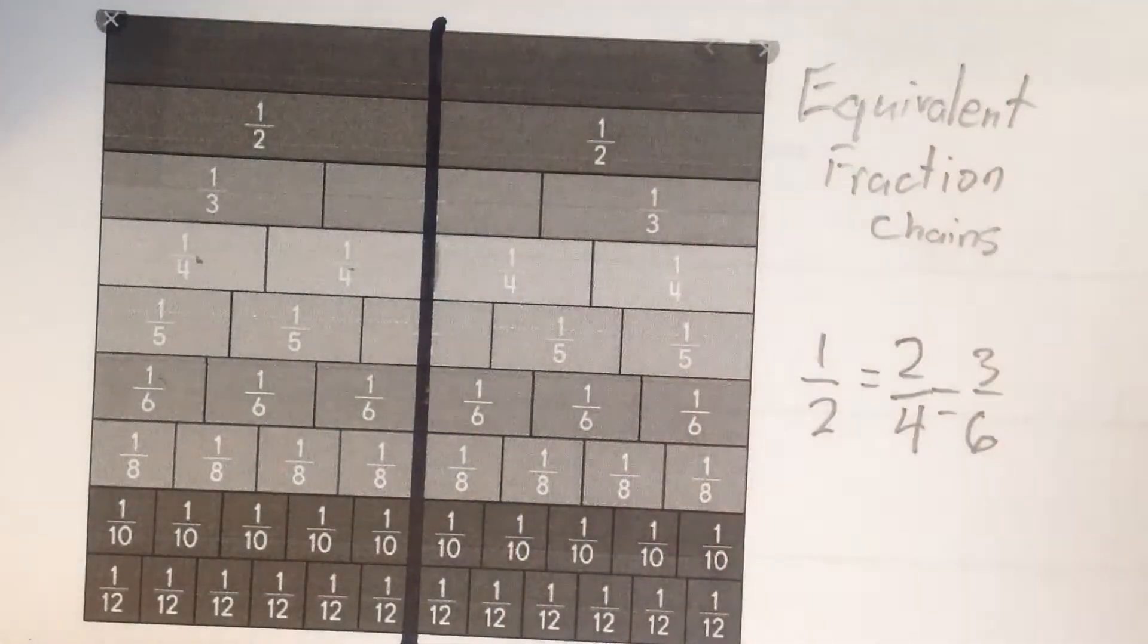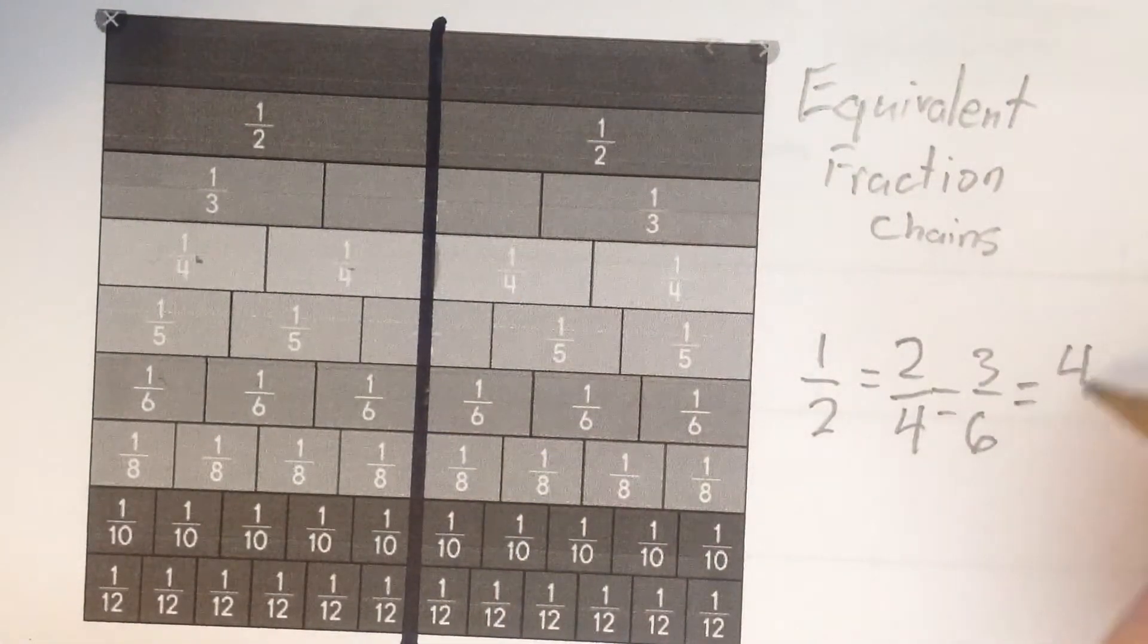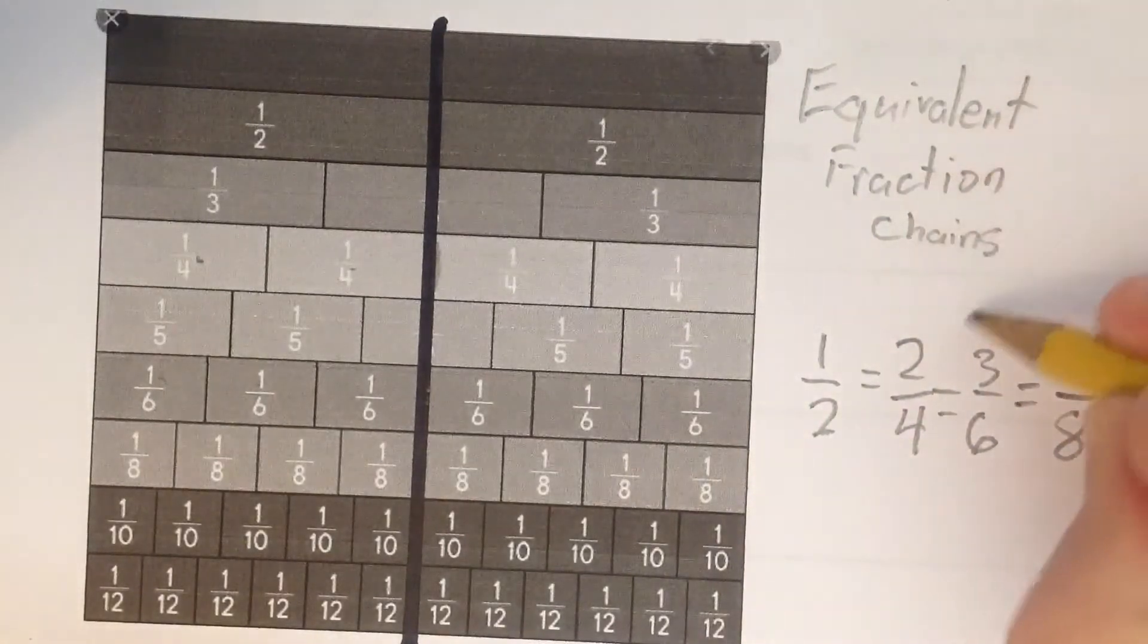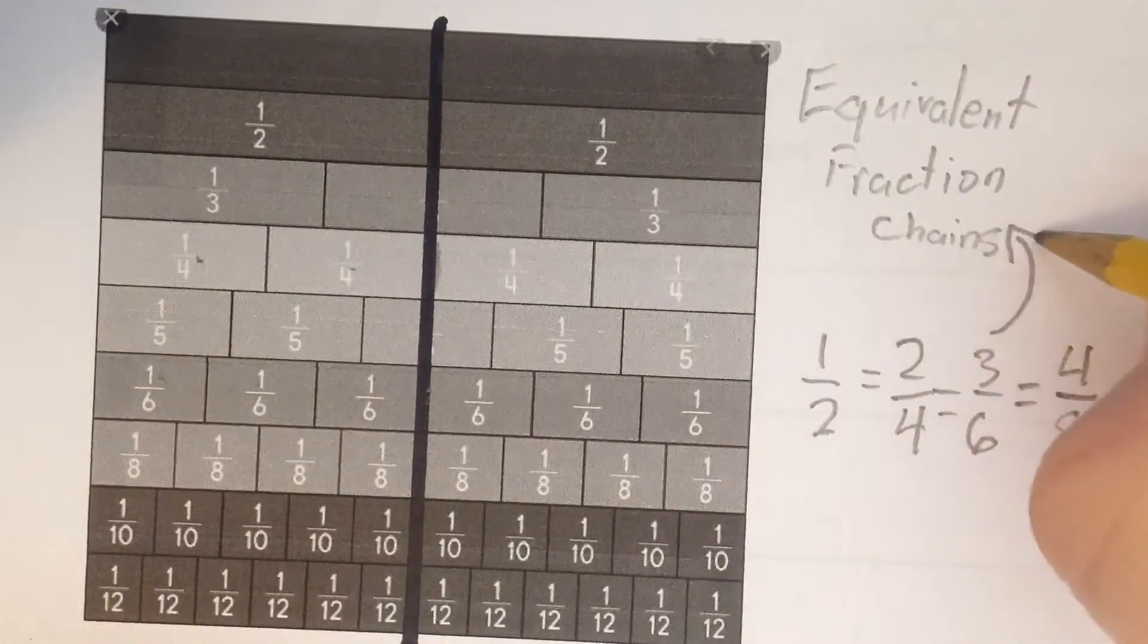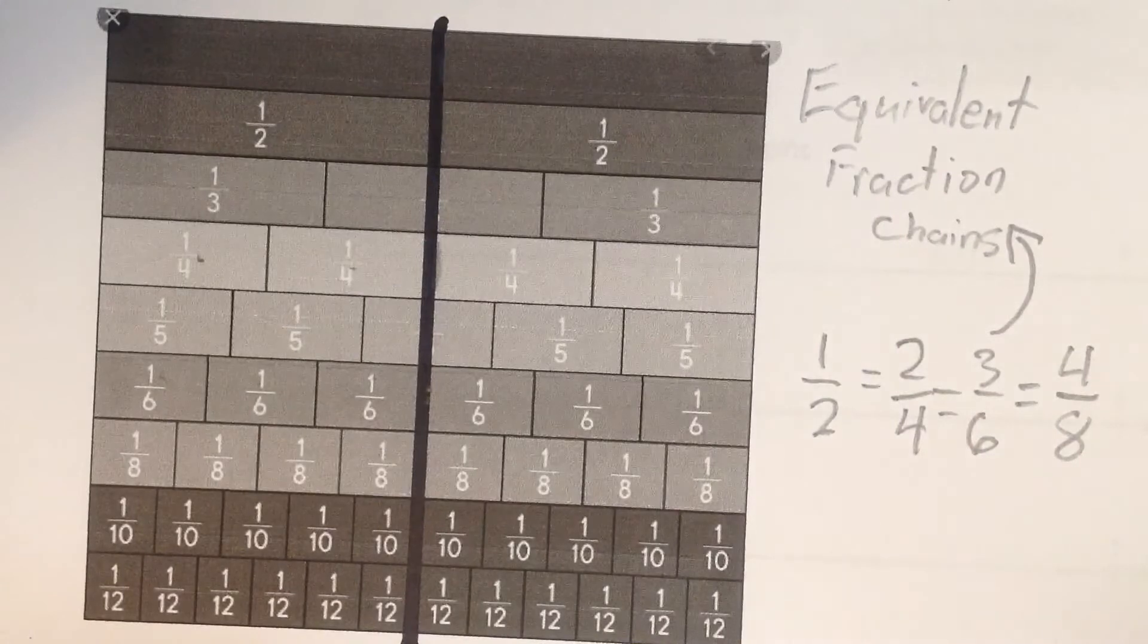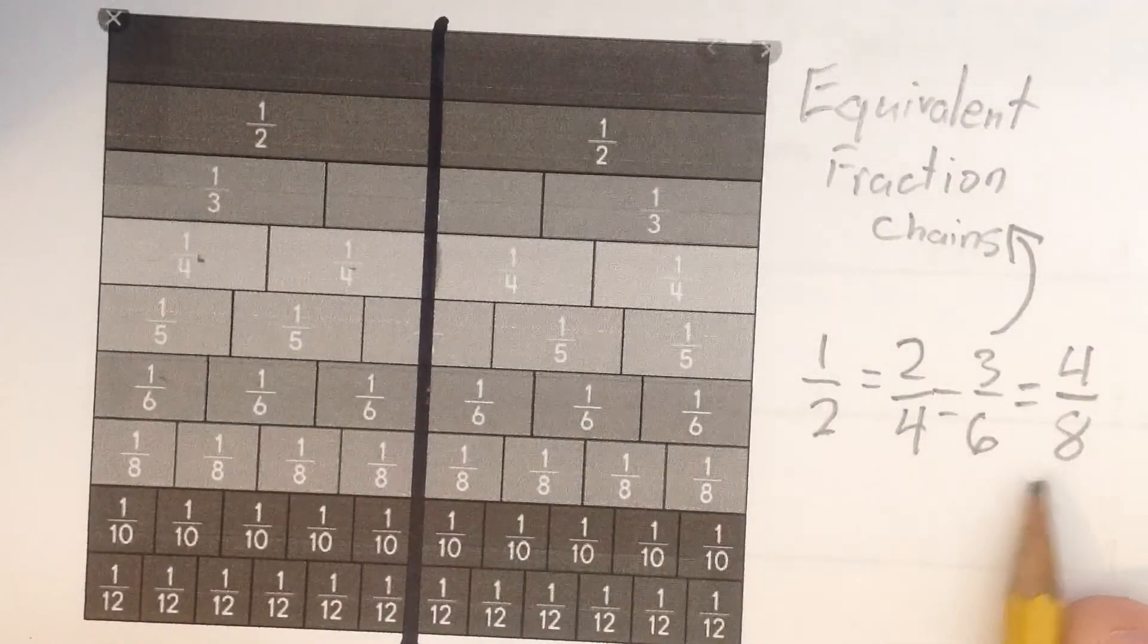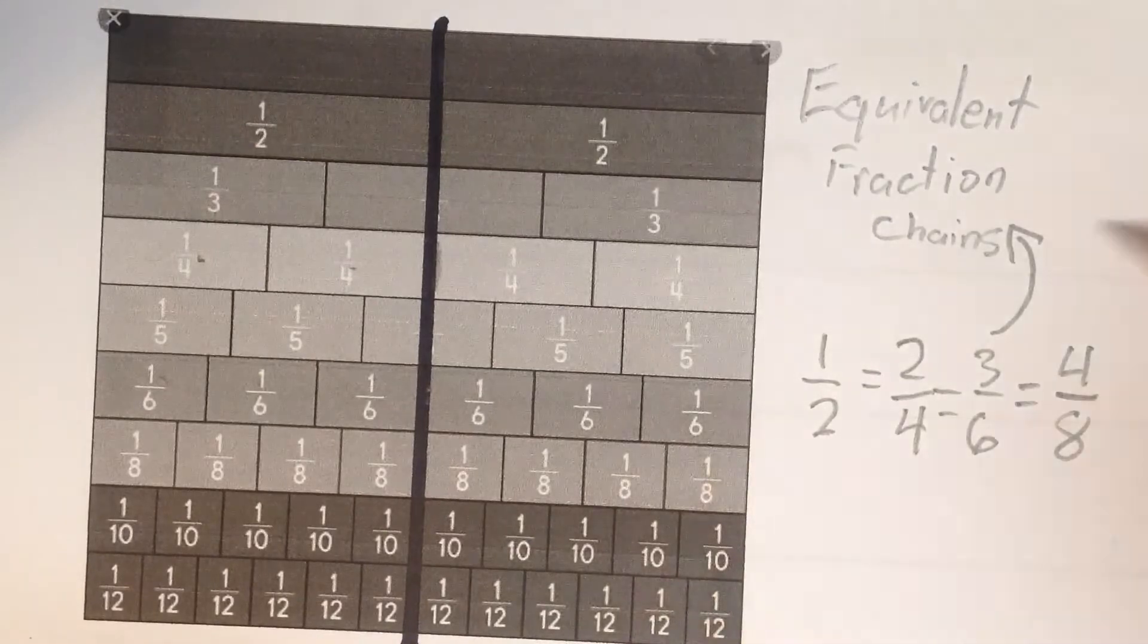Oh, eighths does too. Wow, a lot of these are the same. Four-eighths. Now, this right here is called an equivalent fractions chain. When you put them all together in a chain like this, that's an equivalent fractions chain.